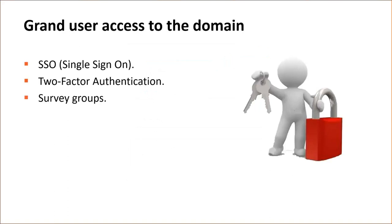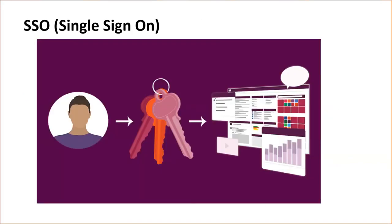Three things we have added: one is the SSO — the single sign-on — we have added two-factor authentication, and we have created survey groups. What the survey groups make possible is to match users to surveys and then make sure that those users only can work on the surveys they should work on and don't even see any other surveys. Let's start with the single sign-on.